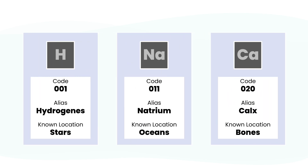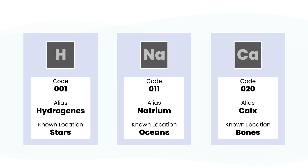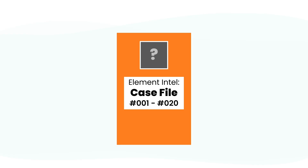H, N, A, C, A. At first glance they look like random codes, but they're not. These are the identities of real elements hidden in stars, oceans, bones, even your DNA. This isn't just chemistry — it's a mission. A mission to decode the first 20 elements one by one before the next operation begins. Case file loaded. Let's begin.